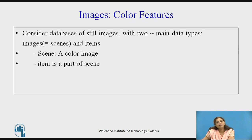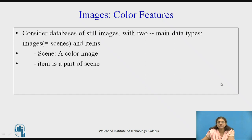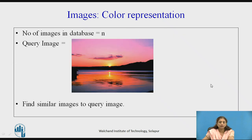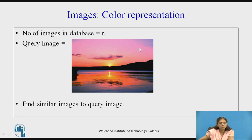Consider a database of still images with two main types: scene and item. A scene is an image and an item is a part of that scene. The number of images in the database is n, and we have a query image for which we want to find similar images.